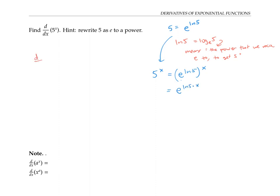Now I want to take the derivative with respect to x of five to the x. By my rewriting trick, that's the same thing as taking the derivative with respect to x of e to the ln five times x. We can calculate this using the chain rule — thinking of e to the power as our outside function, and ln five times x as our inside function.